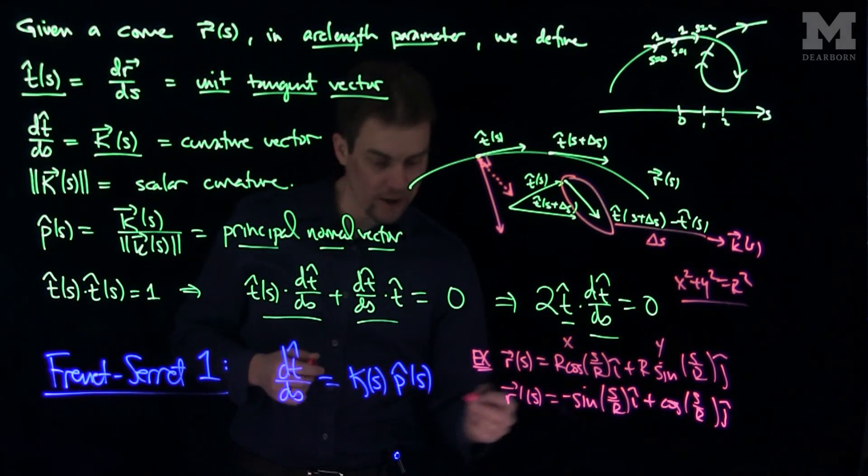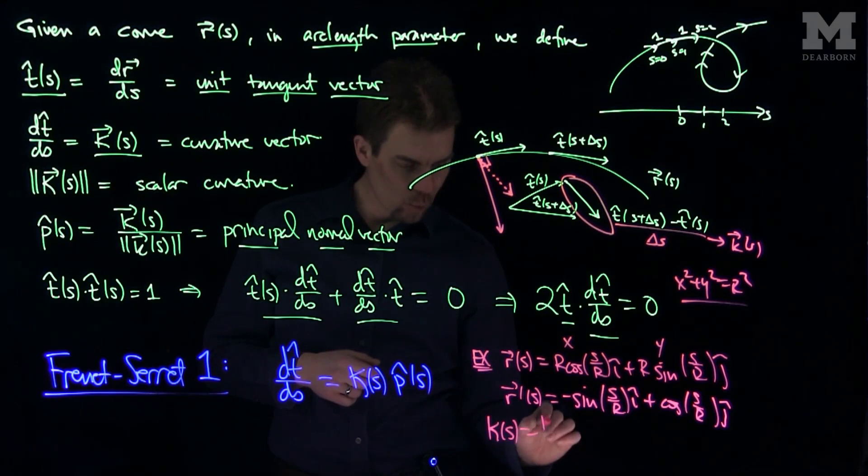And if I do the second derivative, I'll have a factor of one over r come out. So you can check for this curve that the curvature of this curve, the length of the second derivative, the scalar curvature, is one over r.